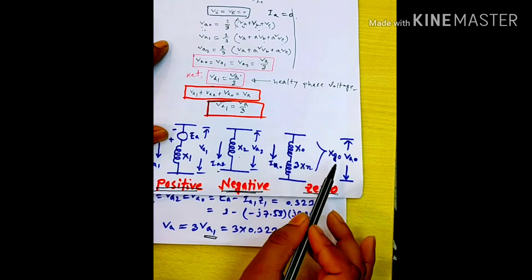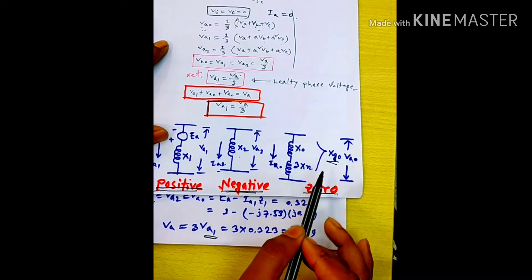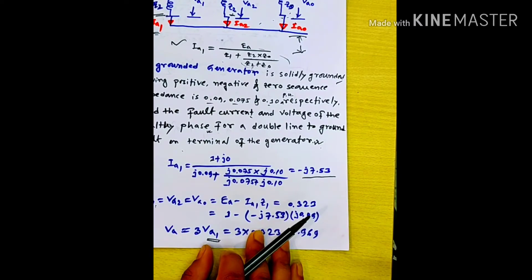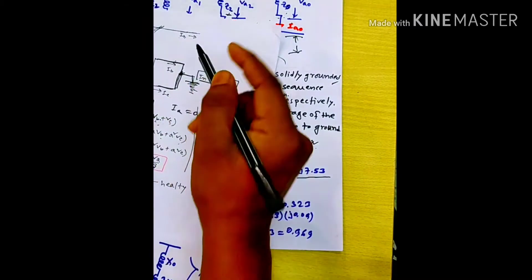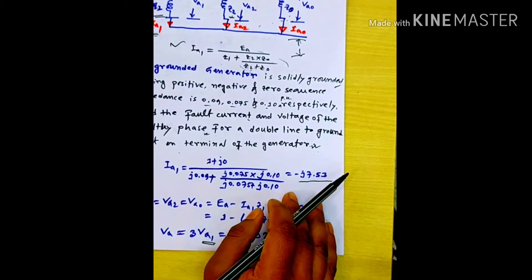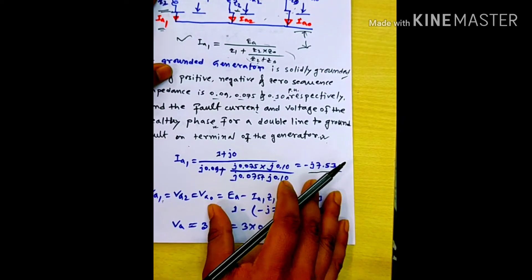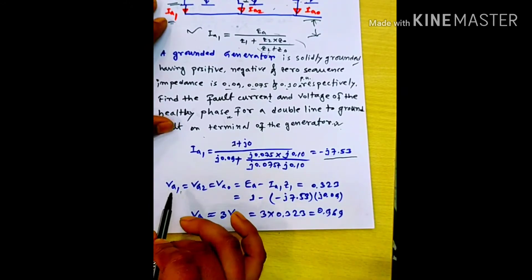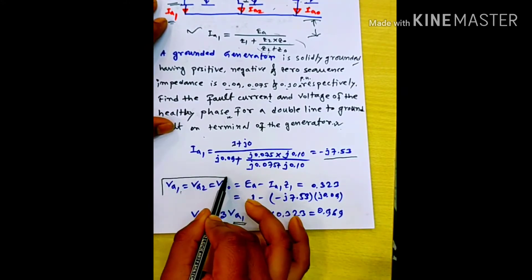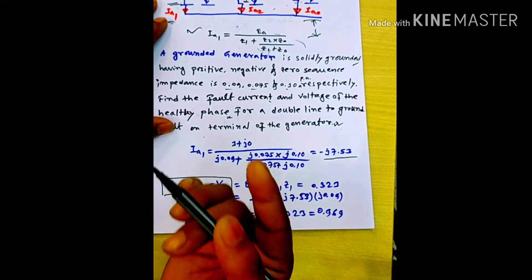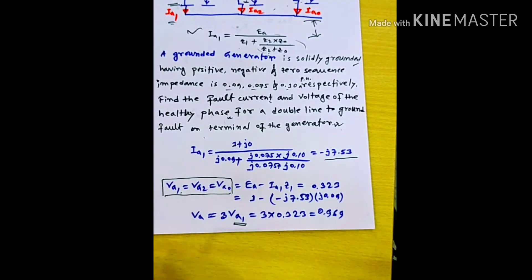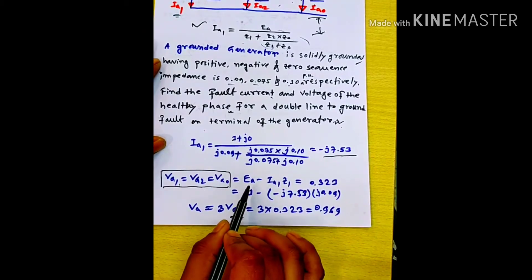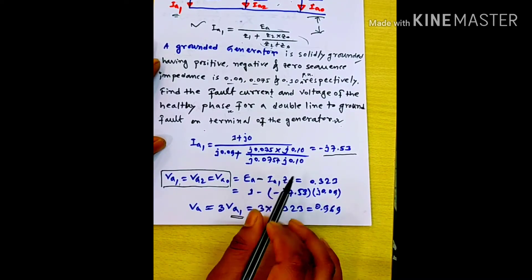Now we have the voltage of our healthy phase. The symmetrical components of the healthy phase are V1, V2, and V0. We have the active value V1, so if we have V1, then we have the positive sequence: Ea minus Ia·Z1 gives the positive sequence voltage V1.